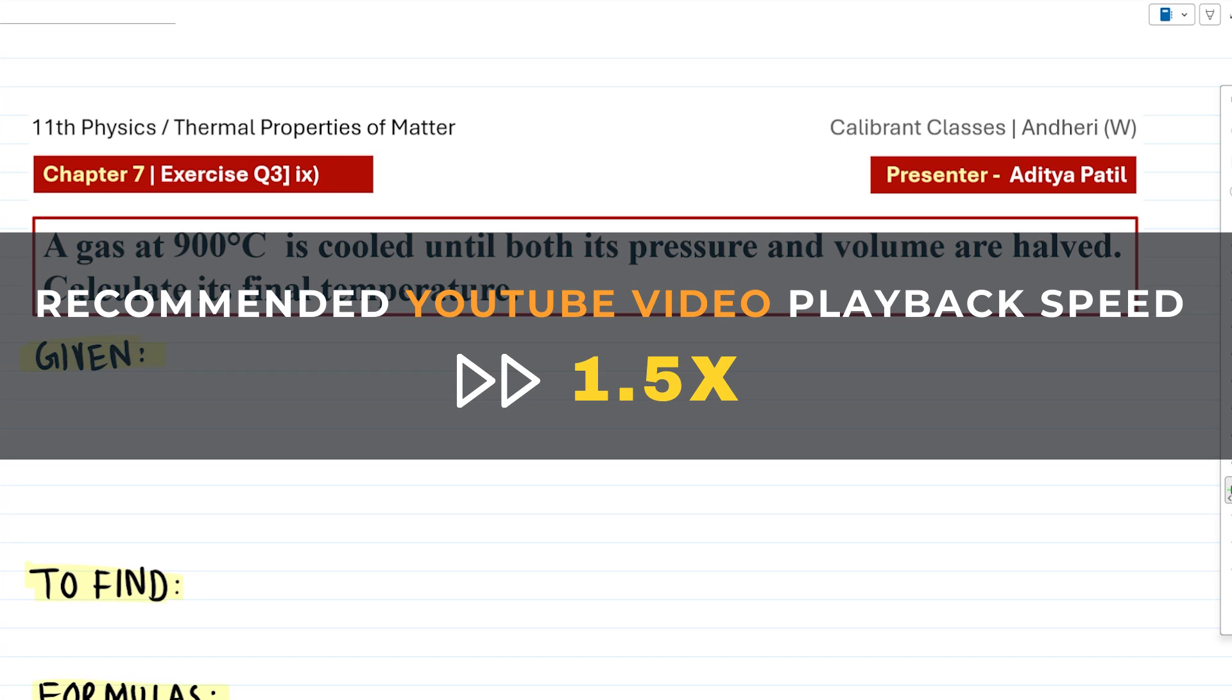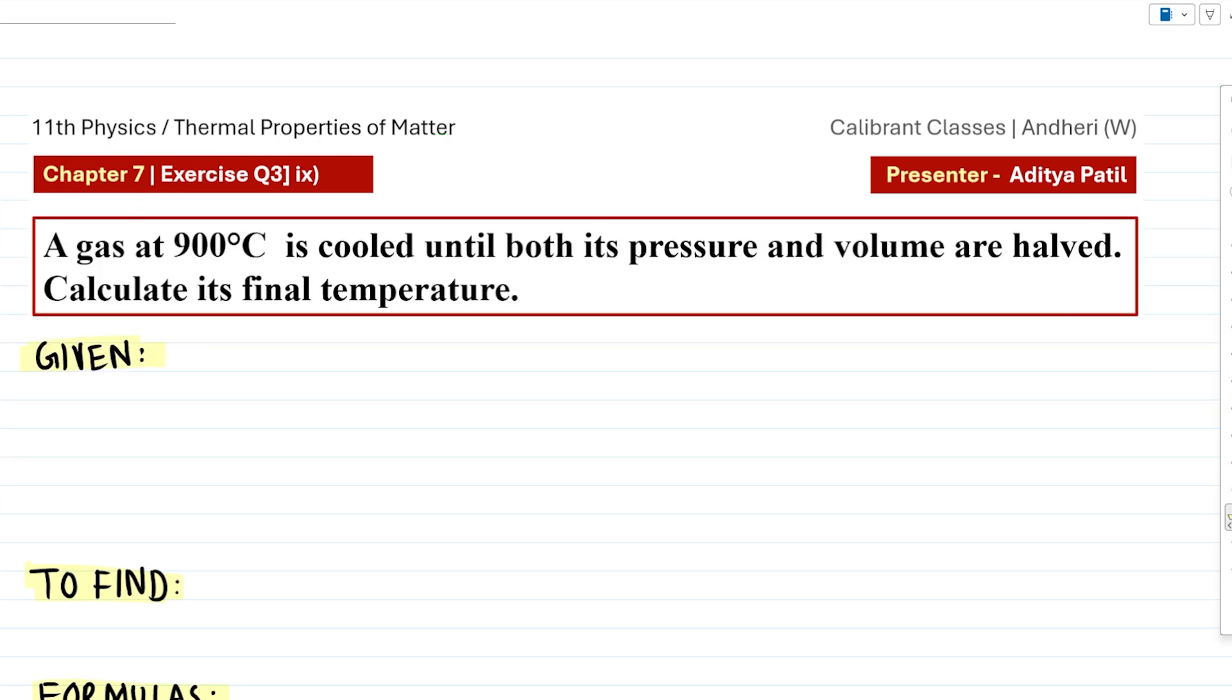Welcome students, we are discussing the 9th numerical from the exercise for chapter 7, Thermal Properties of Matter, from your 11th physics syllabus. The question says: A gas at 900 degrees Celsius is cooled until both its pressure and volume are halved. Calculate its final temperature.